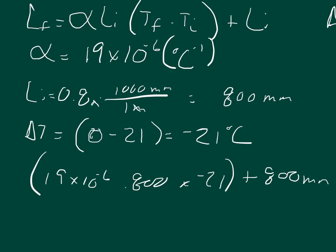And so when you plug all this in, you should get an answer of 799.6808 millimeters. And so this makes sense because our temperature went down and so we think that our length should shorten. And that's what happened.